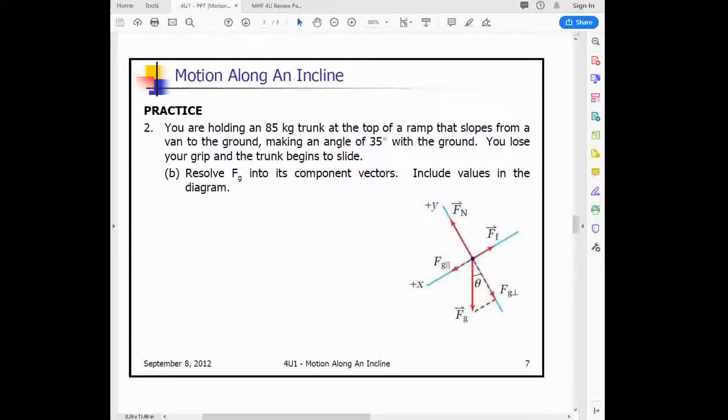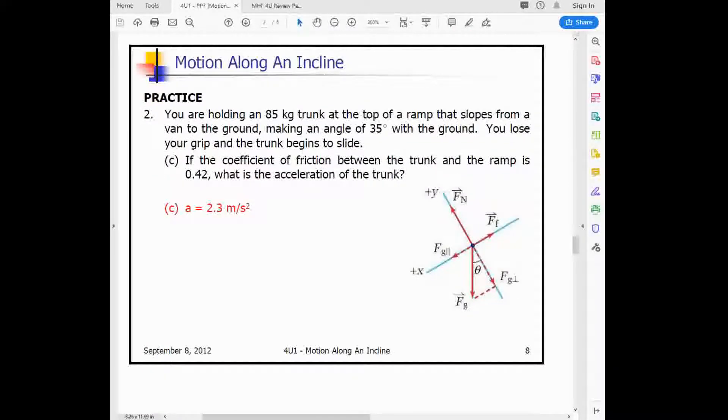And we can break that FG into components. We have an FGX, or FG parallel, operating or opposing the FF, the force of friction. And we have FG perpendicular, or FGY, that opposes the FN. Now another thing about that FN, the FN is going to be equal to FGY, not equal to FG in a situation like this. So lastly, it says if the coefficient of friction is 0.42, what is the acceleration of the trunk? And I will show you how to solve this on the paper.